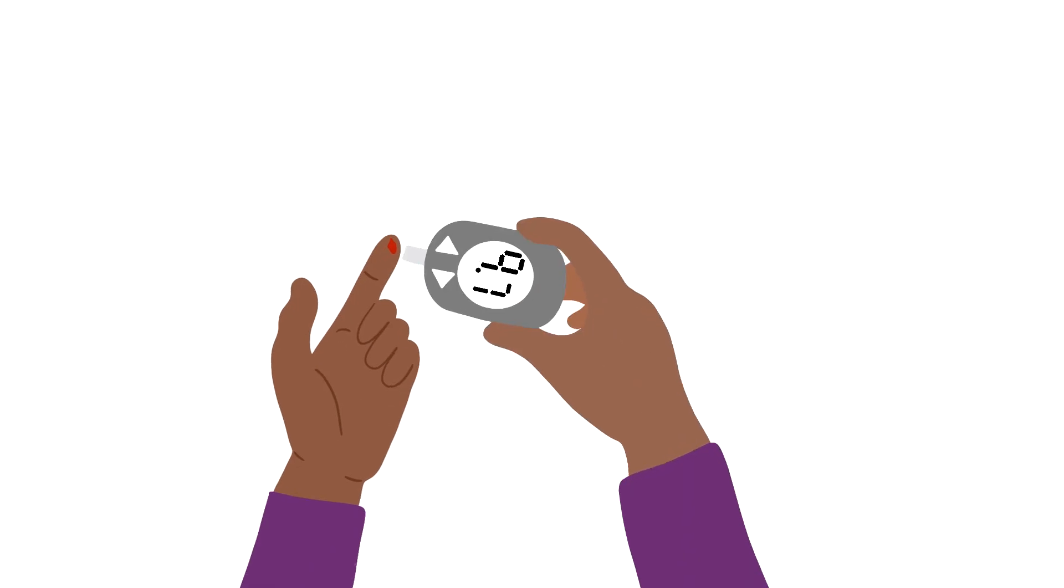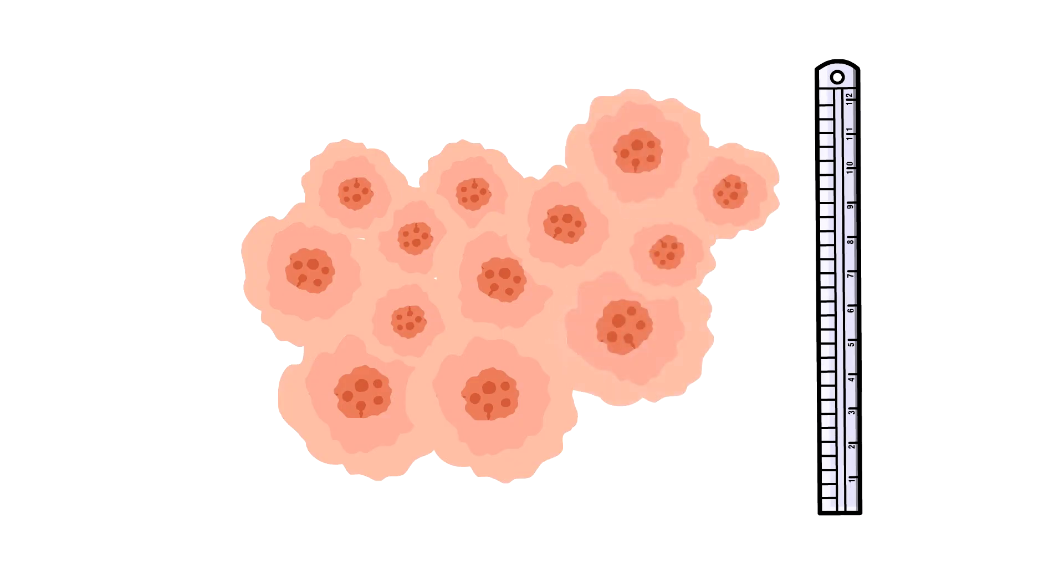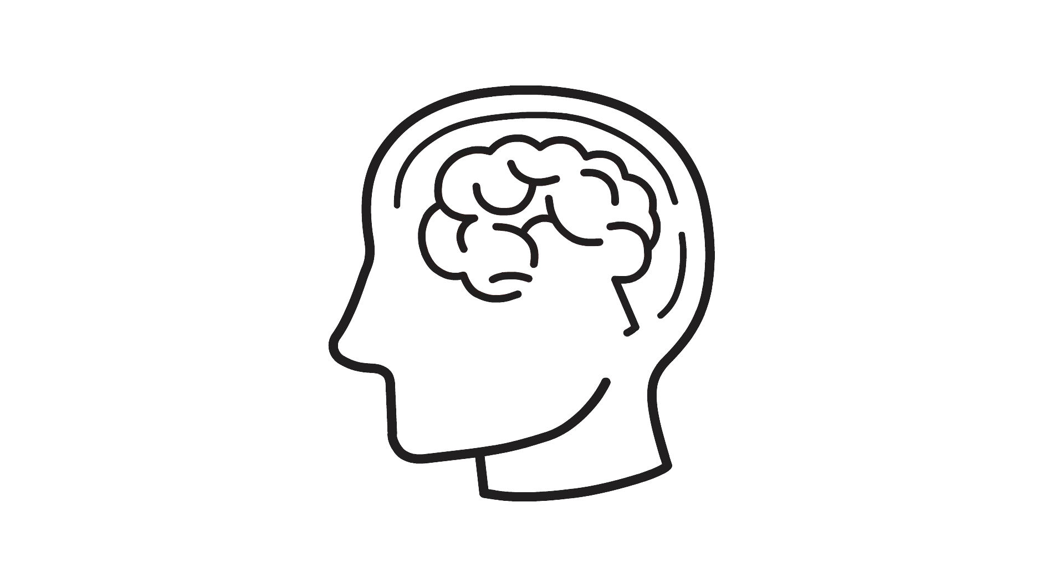Blood sugar levels are surrogate outcomes for diabetes-related complications and death. In cancer, measuring tumor size may be used as a surrogate outcome for how long the patient is likely to survive. Alzheimer's disease causes memory loss that will get worse over time, and researchers may want to quantify that.